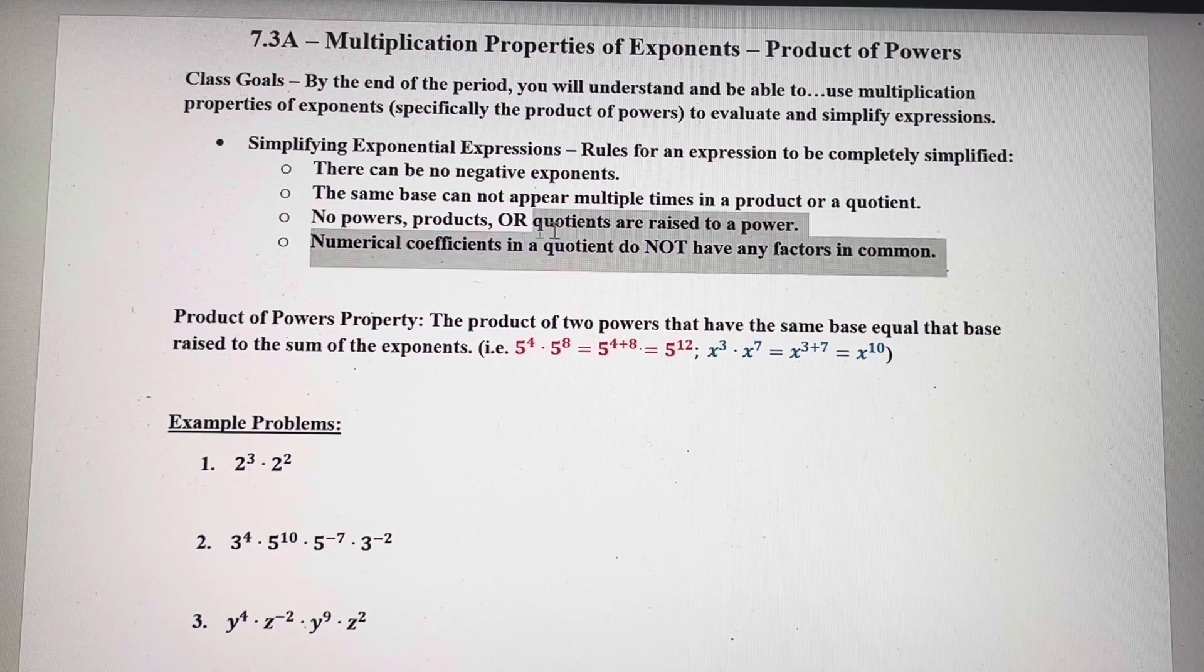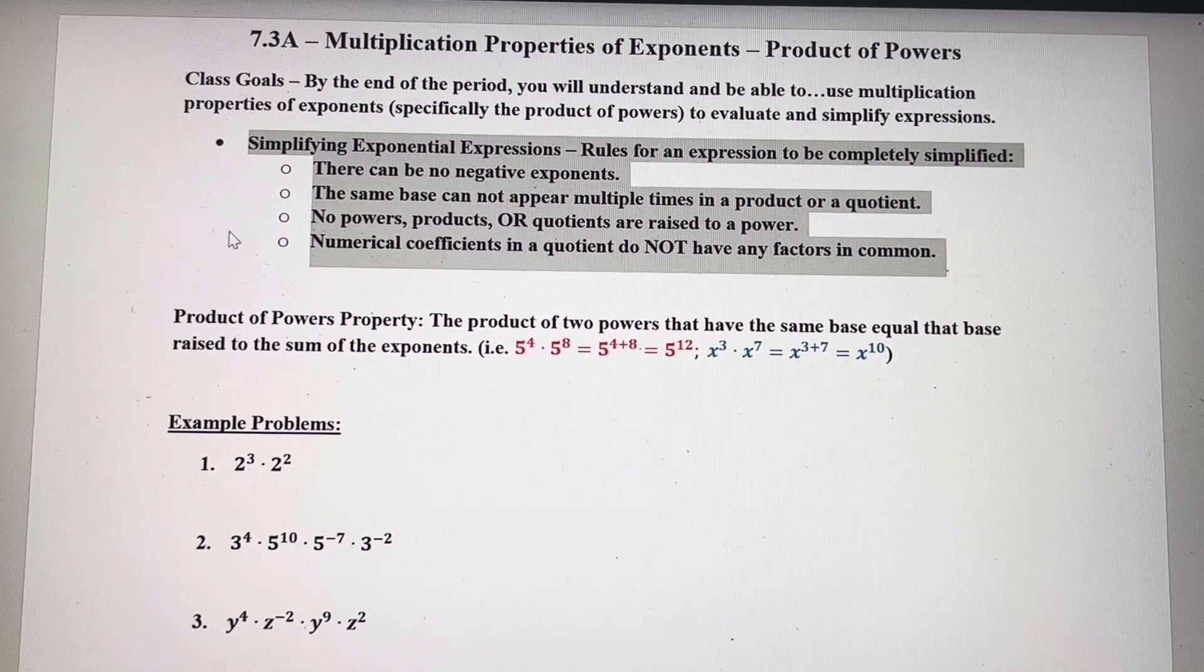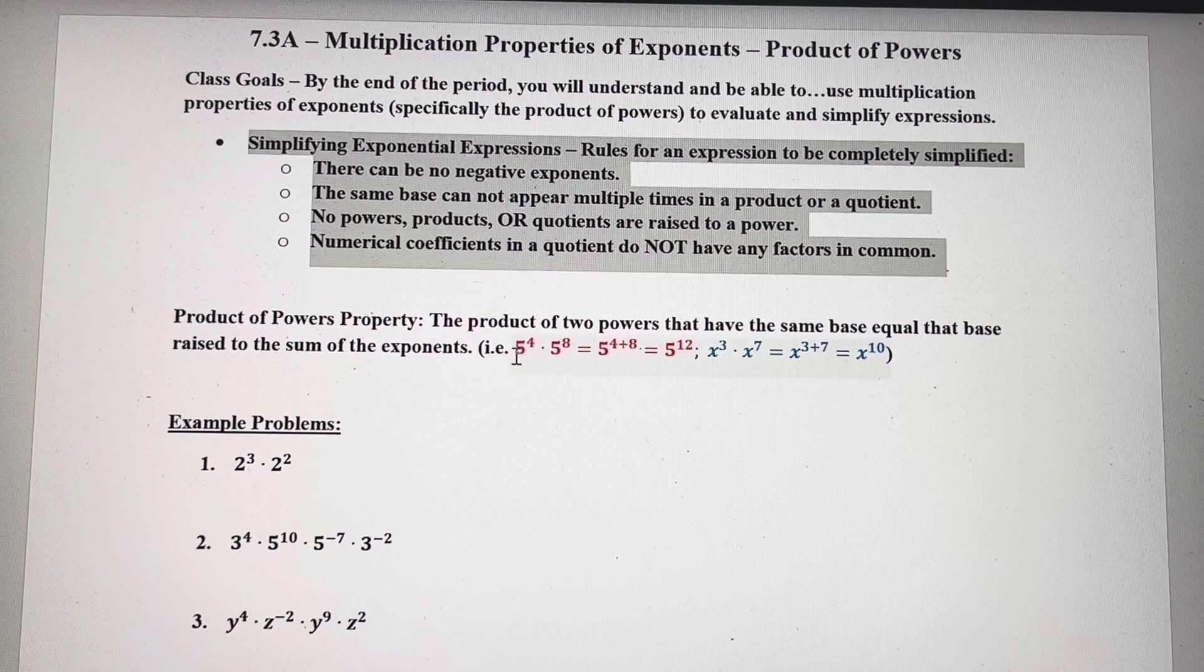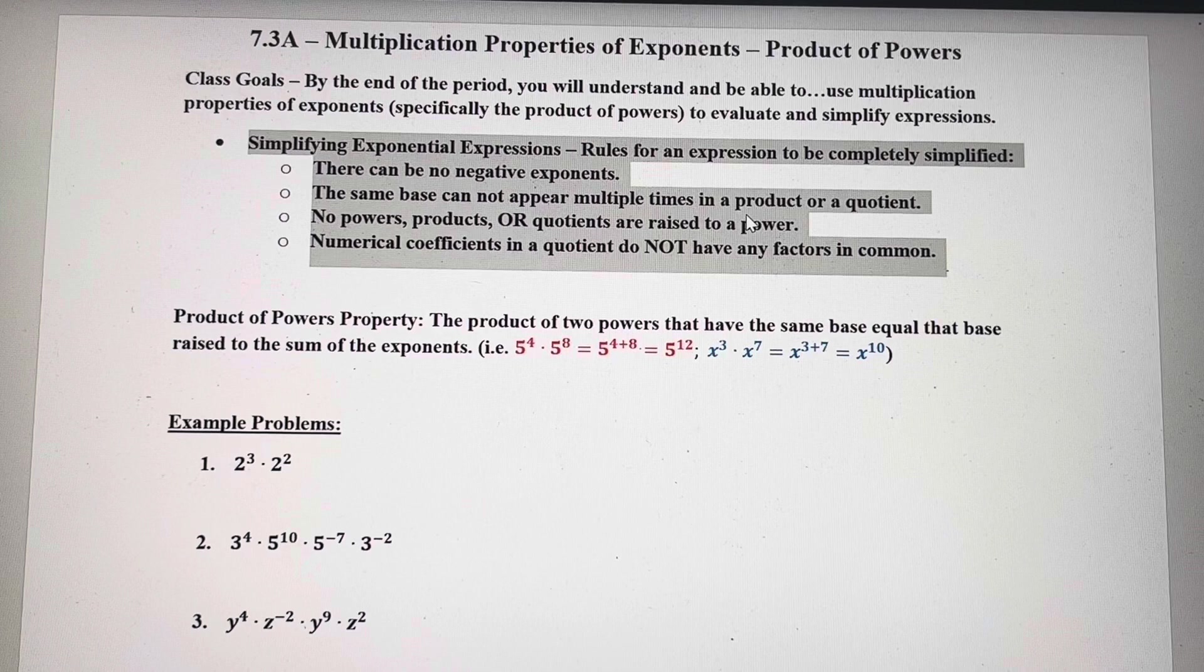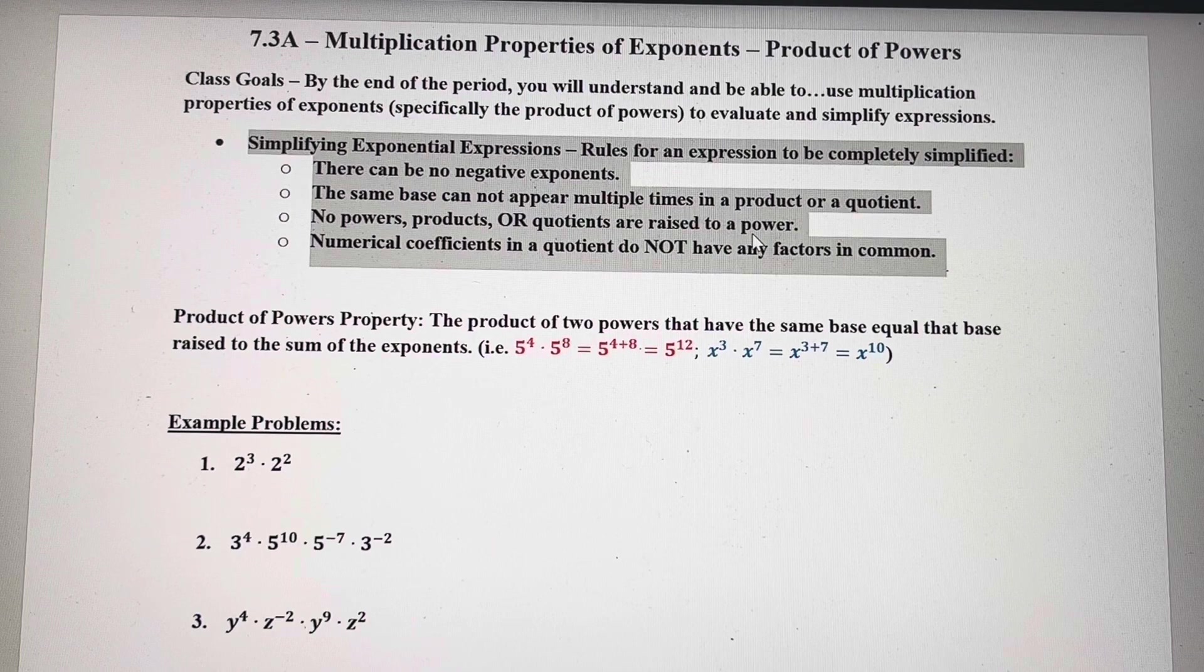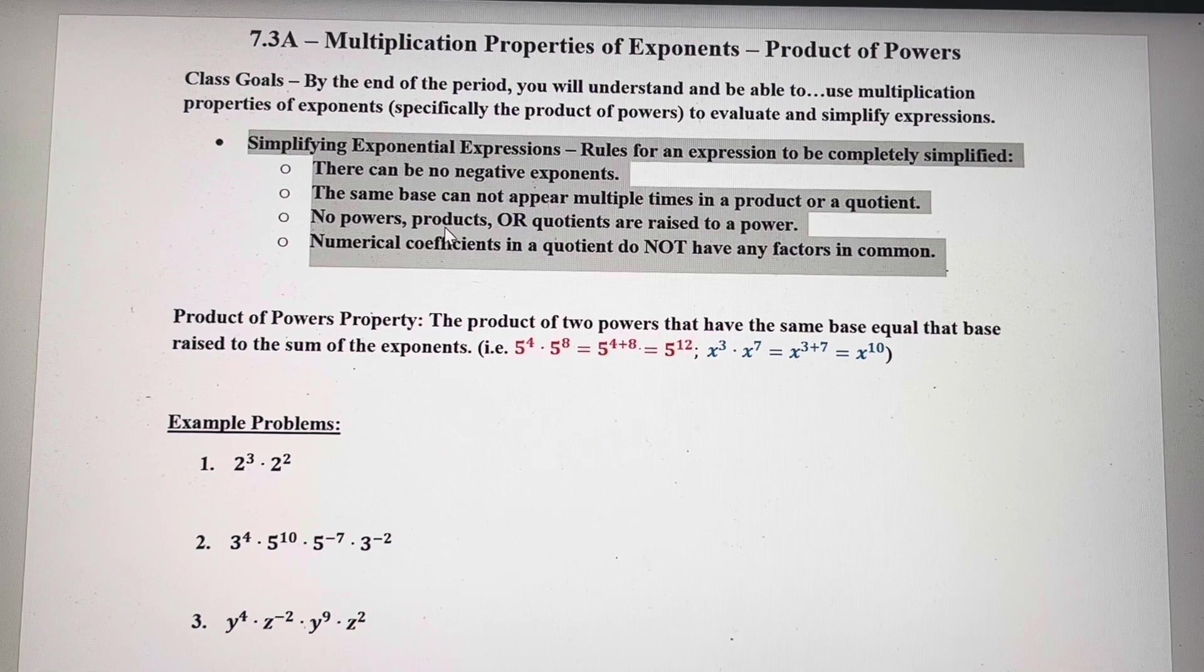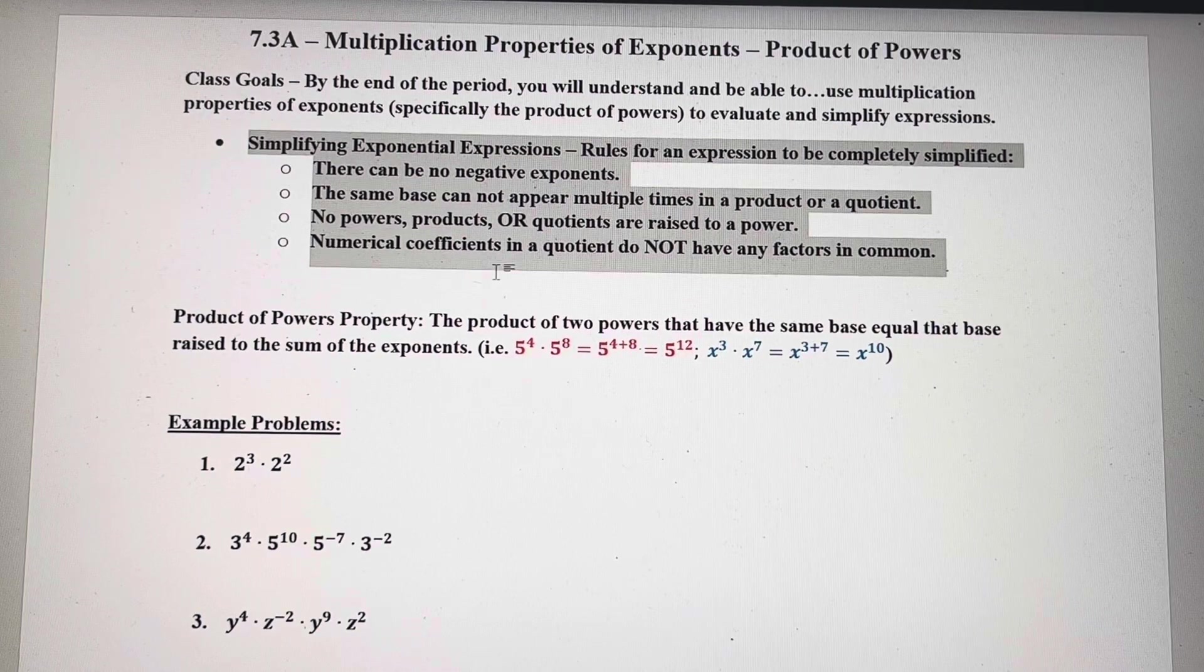As we kind of go through these, we want to talk about what it means to have an exponential expression that's simplified. We've already gone over negative and zero exponents. You can't have any negative exponents in a simplified expression. The same base, like 5, cannot appear multiple times in a product or a quotient. If it does, then you've got more simplifying to do. You can't have a power, a product, or a quotient that is raised to a power. And the next few sets of notes will show you how to go through and make sure we meet this part of simplifying. And then finally, numerical coefficients can't have any factors in common.